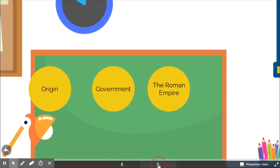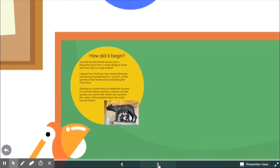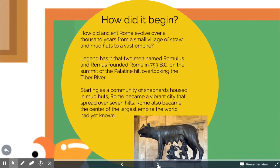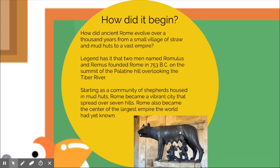Ancient Rome started as some mud huts in a small village, and over a thousand years it encompassed most of Europe. Legend has it that two men named Romulus and Remus, raised by a wolf — that's why you see that picture there, it's a famous sculpture — founded Rome in 753 BC on the summit of the Palatine Hill by the Tiber River, which is modern-day Rome.